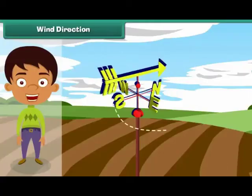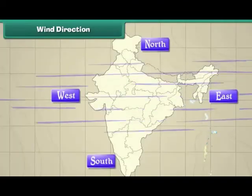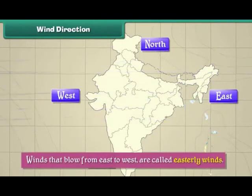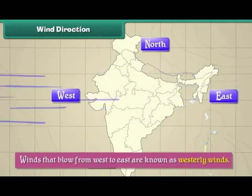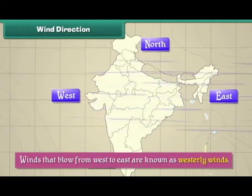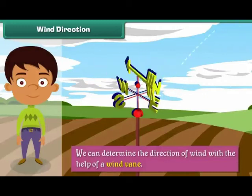Wind has direction and is known by it. For example, winds which blow from east to west are called easterly winds, and winds that blow from west to east are known as westerly winds. We can determine the direction of wind with the help of a wind vane, which indicates the direction from which the wind is blowing.